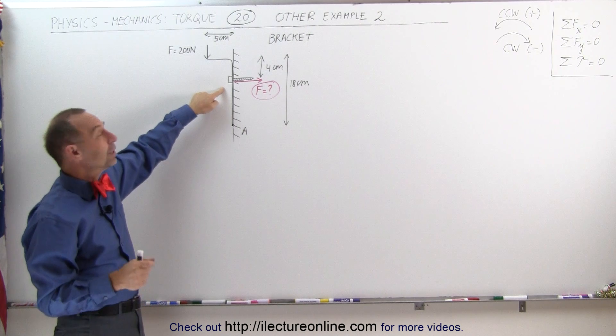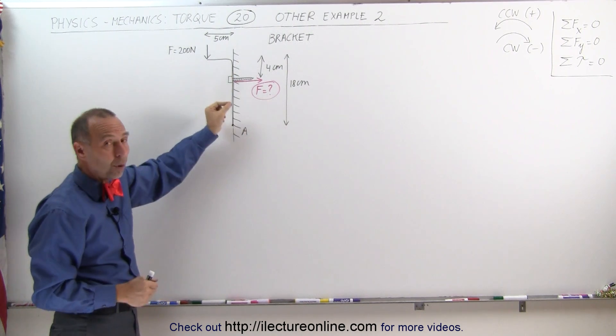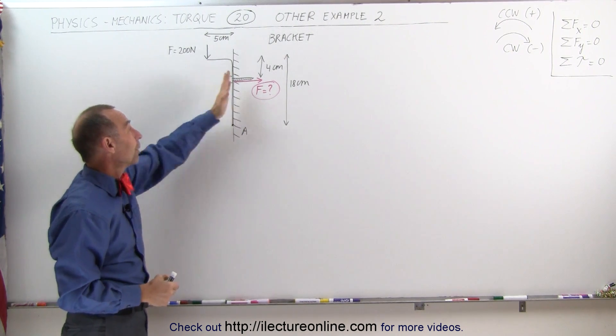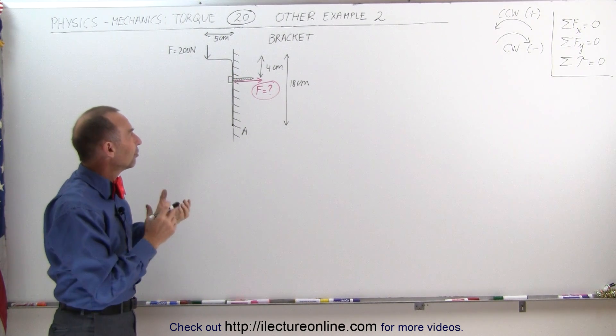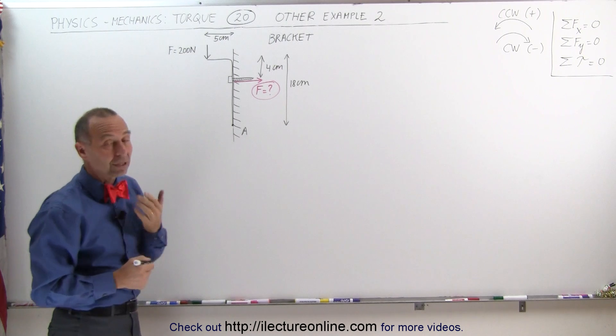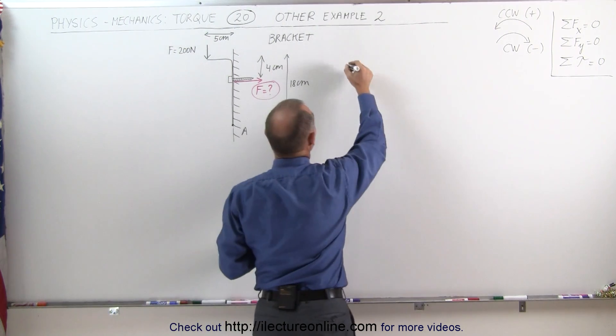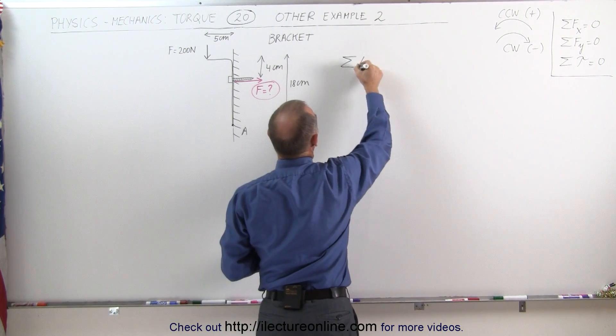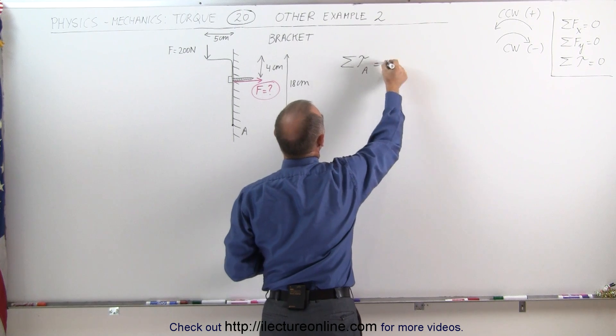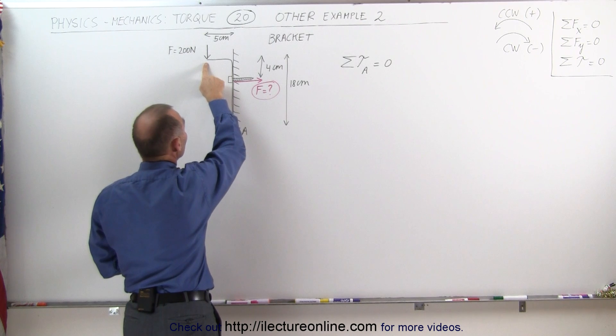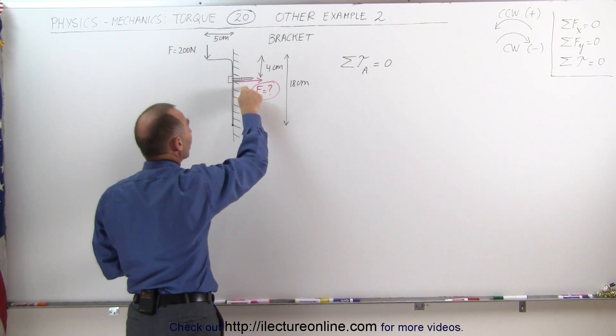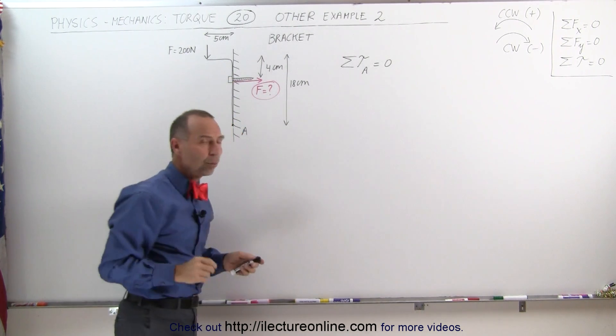Now notice that if we only attach it to a thin layer of drywall, there's not a lot of force there to hold things in. You probably want to have some wood behind it to be able to really screw the screw in tight into something very sturdy. But the concept is the same. We can say that the sum of all the torques about point A must equal zero. Now we have to recognize that there are two torques: one caused by the weight at the end of the bracket and one caused by the force of the screw holding the bracket against the wall.